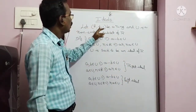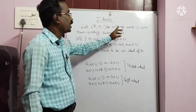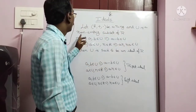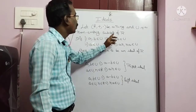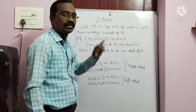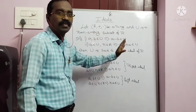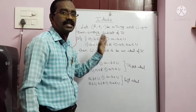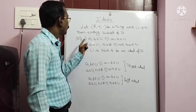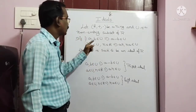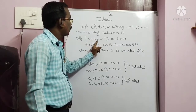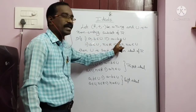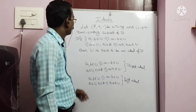Let R plus dot be a ring and U is a non-empty subset of R. R is a ring, U is a non-empty subset. Now, two points. A, B belongs to U implies A minus B belongs to U.